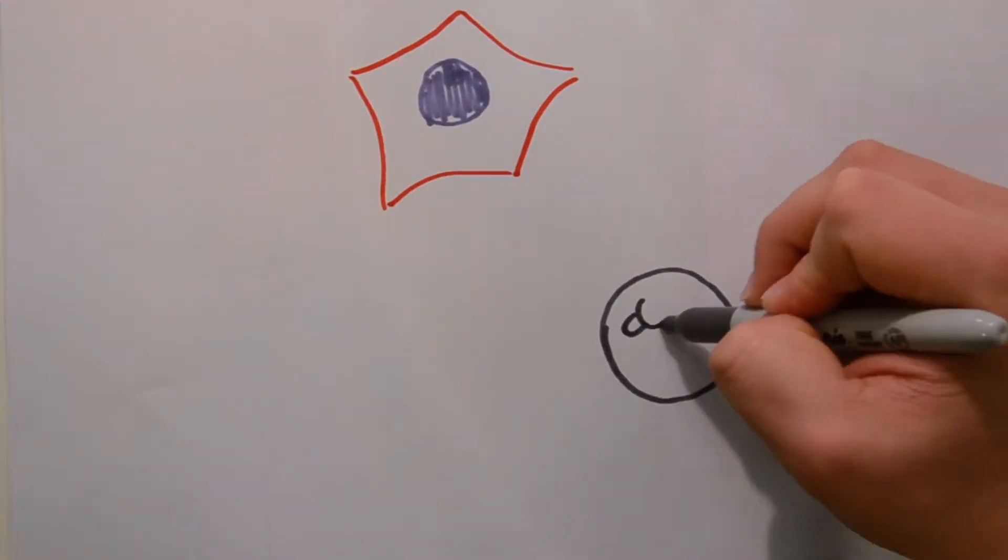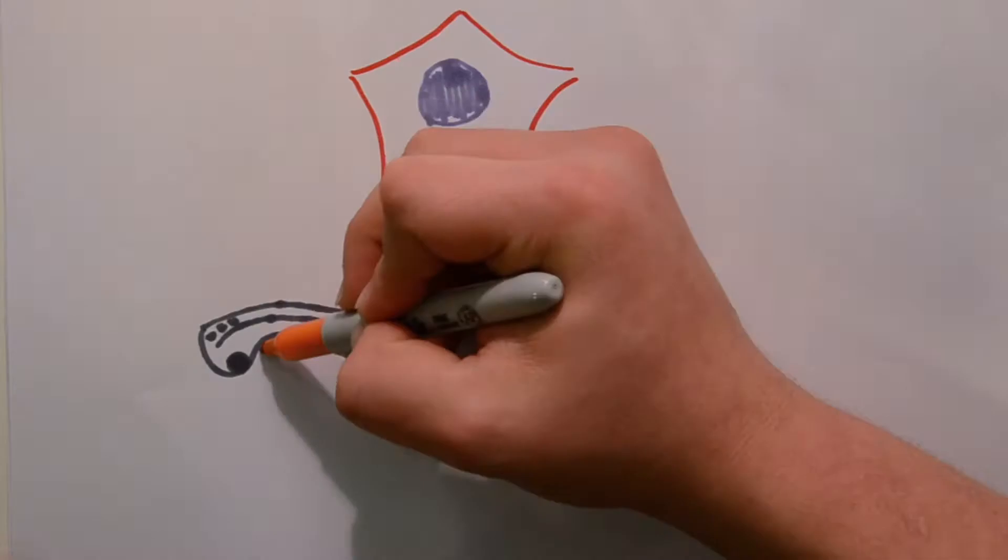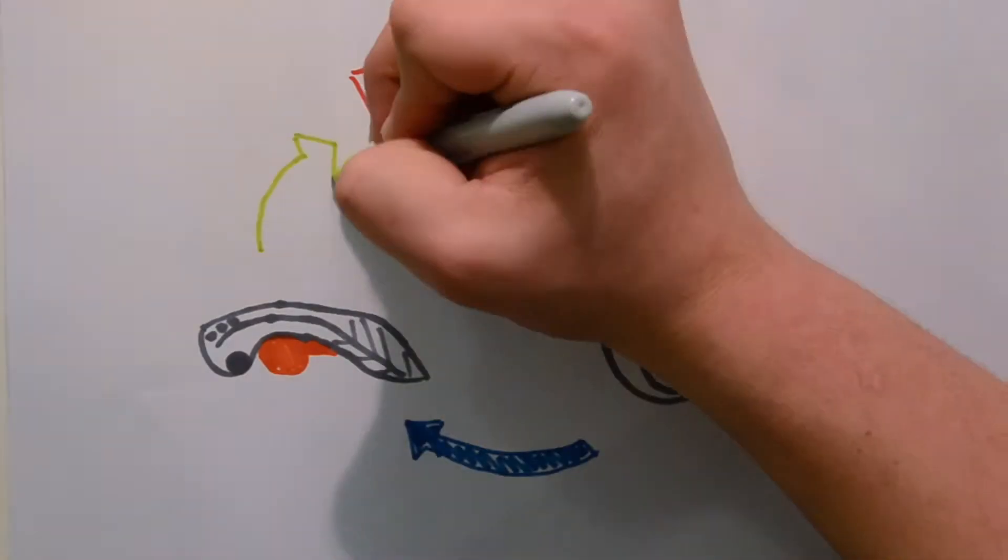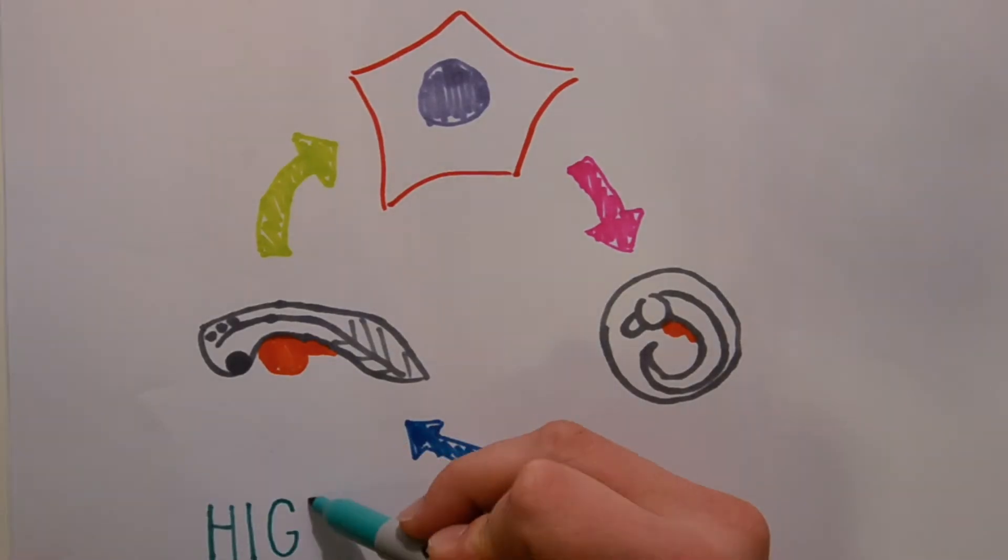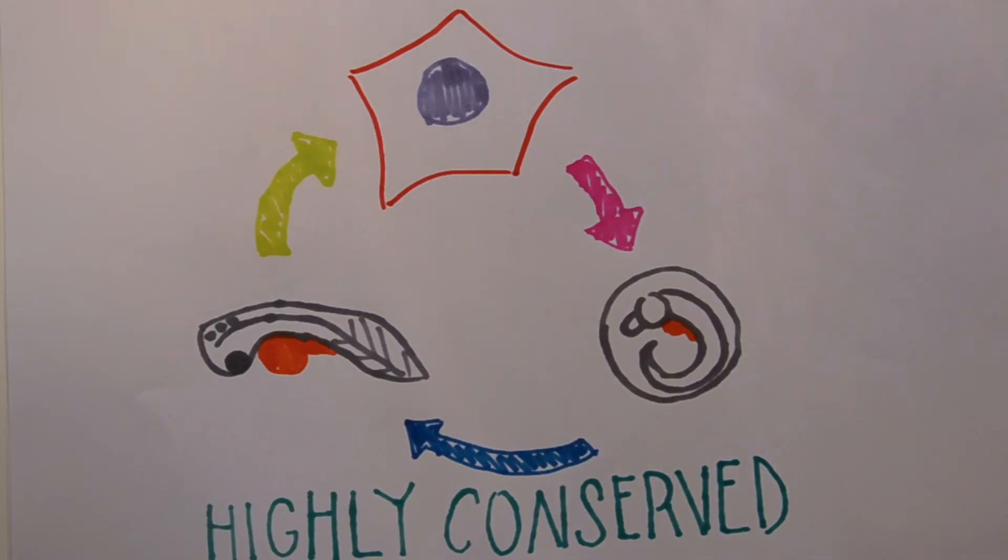The zebrafish also has many characteristics that make it an attractive model for embryology and developmental biology. These processes are highly conserved among species and particularly among invertebrates.